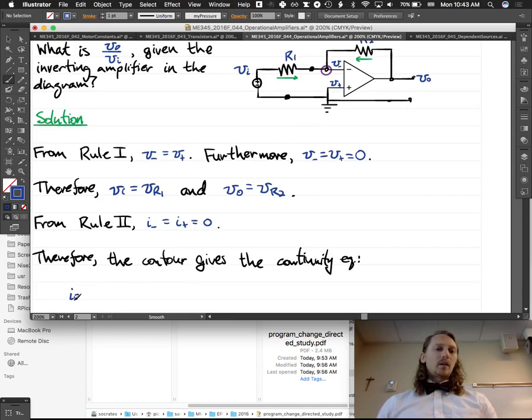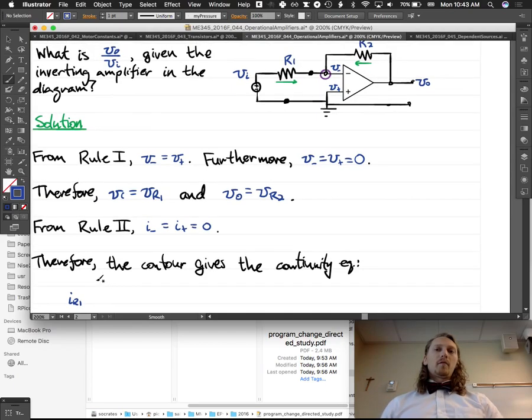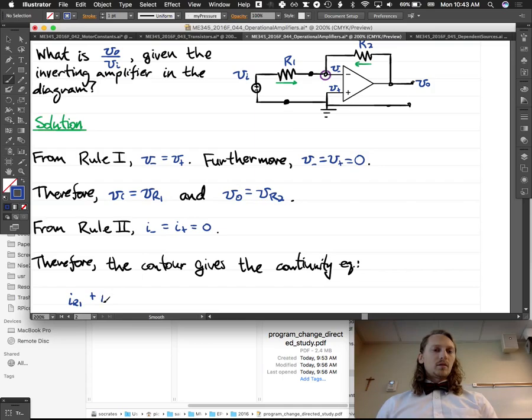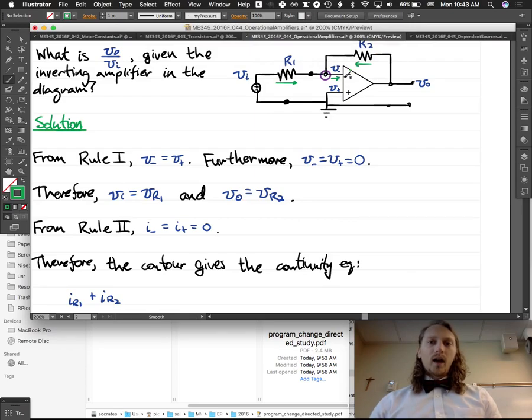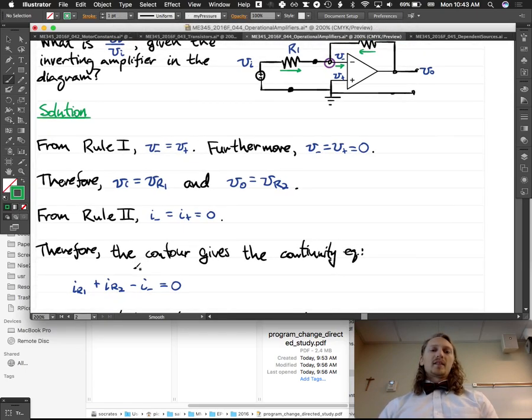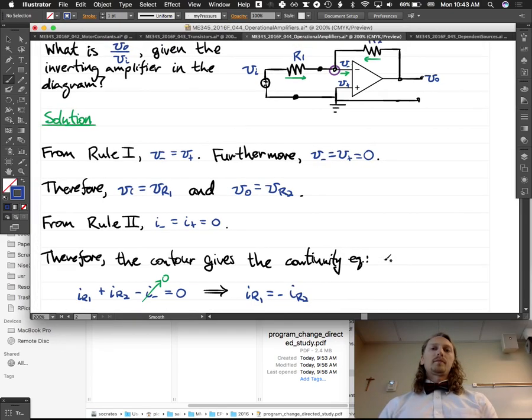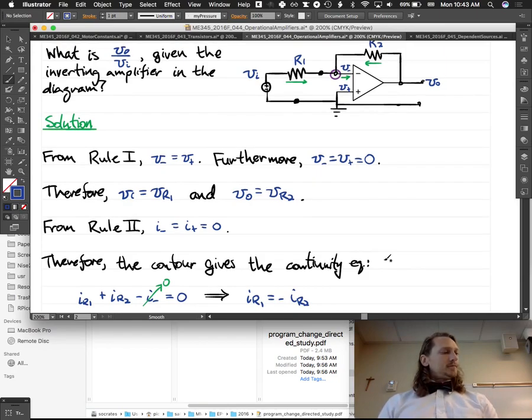So, we have, going into that node, we have I_R1, right? We have I_R2, and then we have, we didn't do an arrow, we should do an arrow for I minus, so we say minus I minus equals zero. But, we also are assuming that I minus is zero, right? So, that implies that I_R1 is equal to negative I_R2. Is that pretty clear to everyone?